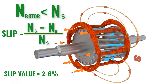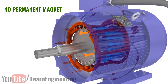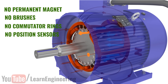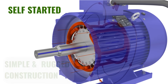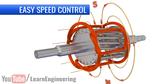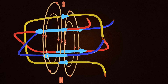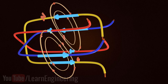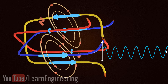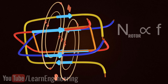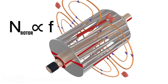Now let's understand why induction motors rule both the industrial and domestic worlds. Induction motors do not require a permanent magnet. They do not even have brushes, commutator rings, or position sensors like other electrical machine counterparts. Induction motors are also self-starting. Most importantly, induction motor speed can be controlled easily by controlling the input power frequency. The speed of the RMF is proportional to the frequency of the input power, and because the rotor always tries to catch up with the RMF, rotor speed is also proportional to AC power frequency. Thus, by using a variable frequency drive, one can control the speed of the induction motor very easily.